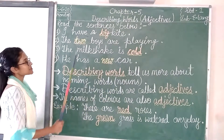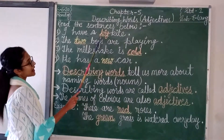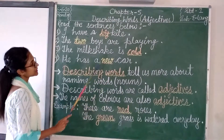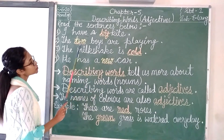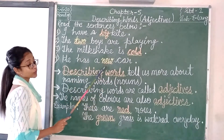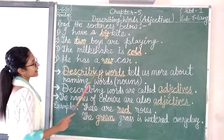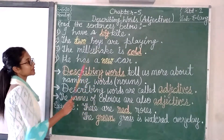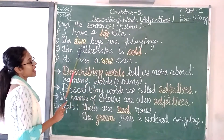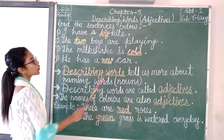Children, here are some sentences and you can notice one thing — I have highlighted some words here: big, two, cold, new. So, the words that I have highlighted — big, two, cold, new — what is the meaning of these words?